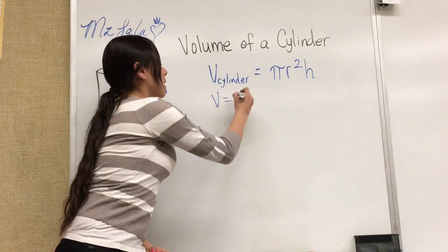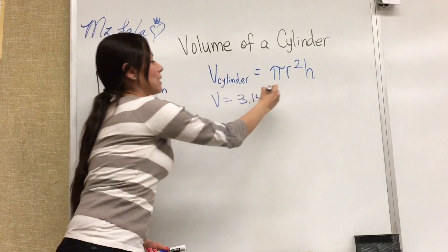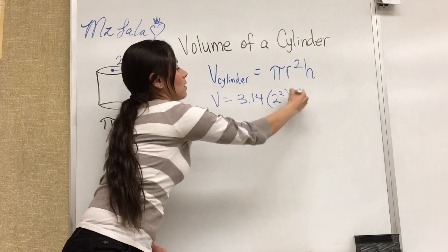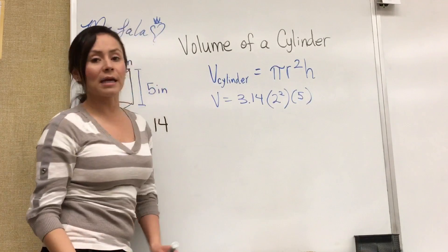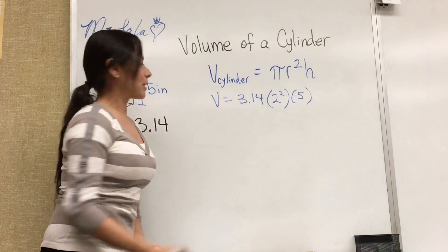So that would be pi times our radius which is 2 inches, square that times our height which is 5. Okay so the order of operations says we must do our exponents first.